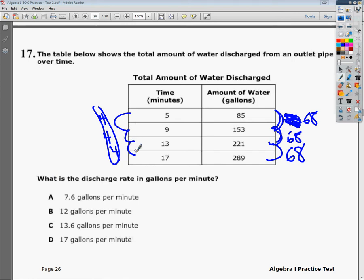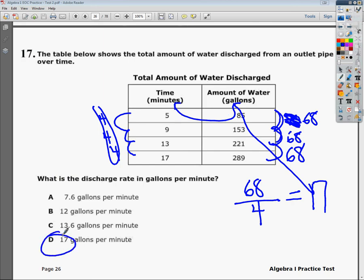So all I need to do is take the change on the top and the change on the bottom, or dependent over independent, and then I just do that quick division. And I find out that it's 17, and I know that is 17 gallons per minute. So my answer is D.